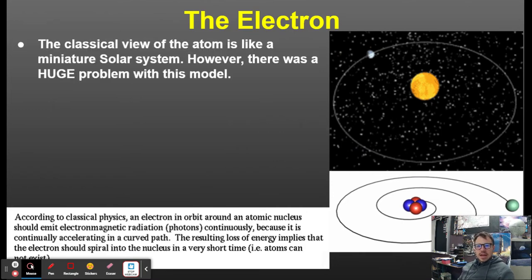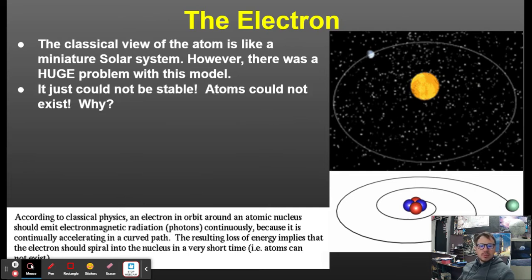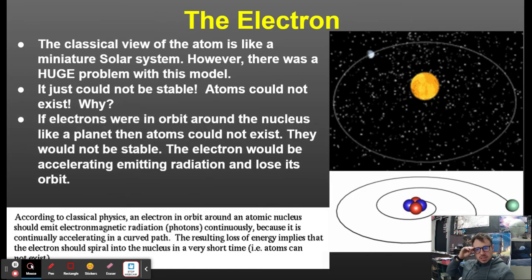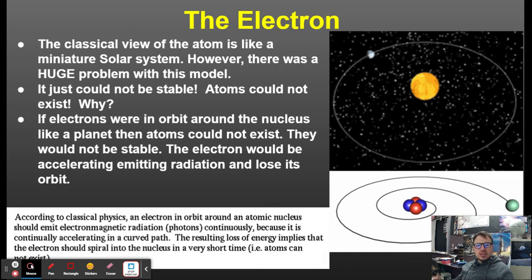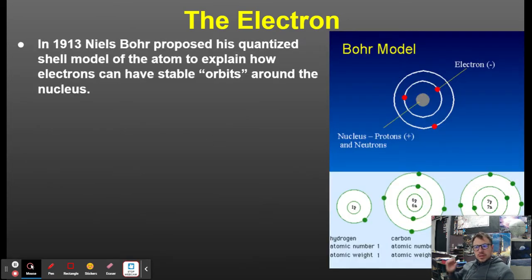The classical view of the atom is like a miniature solar system. However, there was a huge problem with this model — it just could not be stable. Atoms could not exist, because if the electrons orbited around the nucleus like a planet, the electron would be accelerating and eventually lose its orbit.